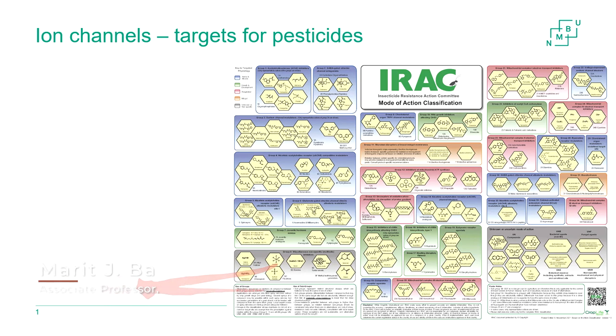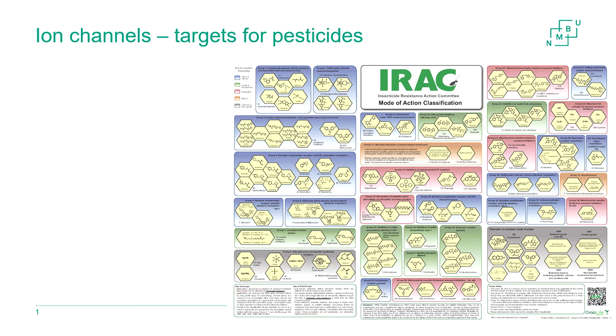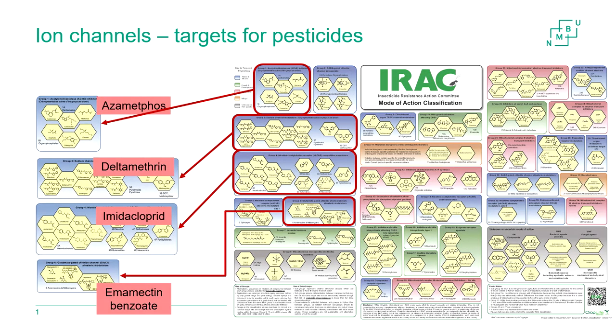Disruption of ion channels is detrimental and can lead to paralysis and death in the affected organism, and thus ion channels are suitable targets for pesticides. As you can see in this poster from the Insecticide Resistance Action Committee, all the blue boxes indicate substances that target ion channels. We also find the substances against sea lice in these groups, including the newest addition of imidacloprid.